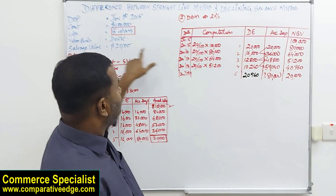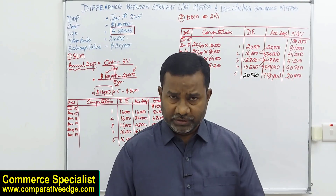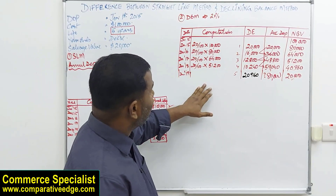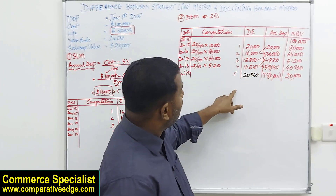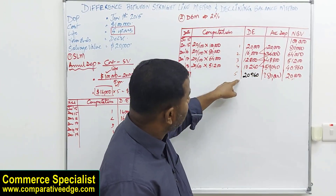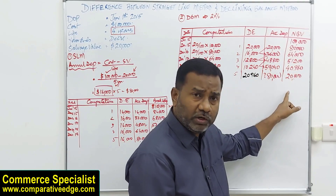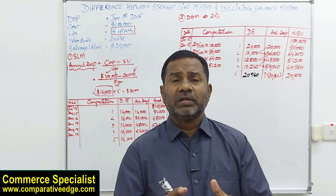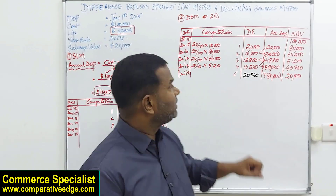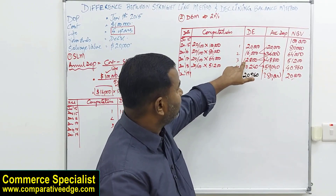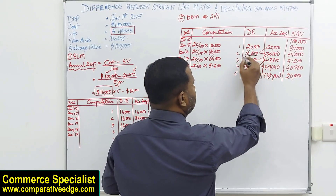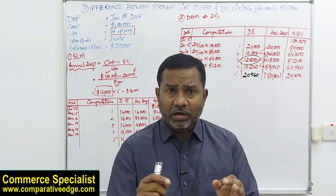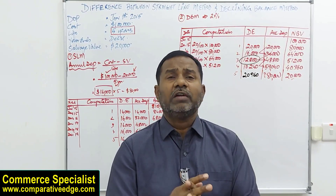I hope you've understood this. Now an exam tip: this depreciation schedule is very important because you need depreciation expense, accumulated depreciation, and book value for each year. But sometimes in an examination you are asked directly for the depreciation of a specific year — say the third year — using the declining balance method. Instead of making the entire table, there is a shortcut that will save you a lot of time.